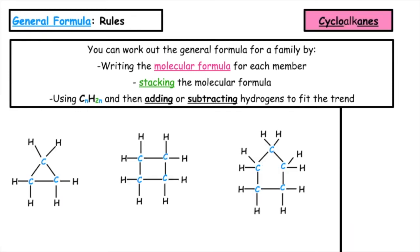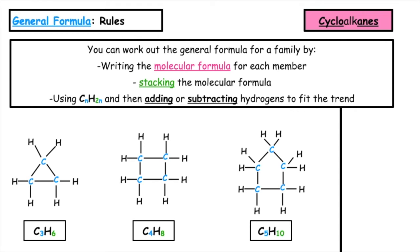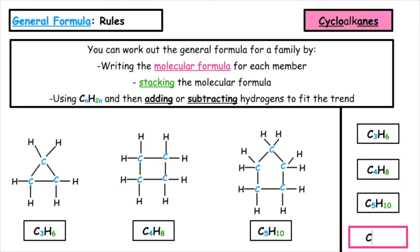Let's do this with the cycloalkanes. We write out the molecular formulas: C3H6, C4H8, and C5H10. We stack the formulas and start with CnH2n. 3 times 2 is 6, 4 times 2 is 8, and 5 times 2 is 10. So the general formula for the cycloalkanes is also CnH2n.